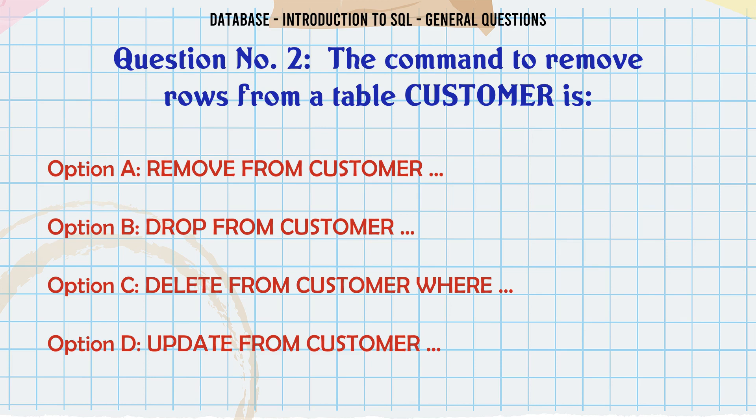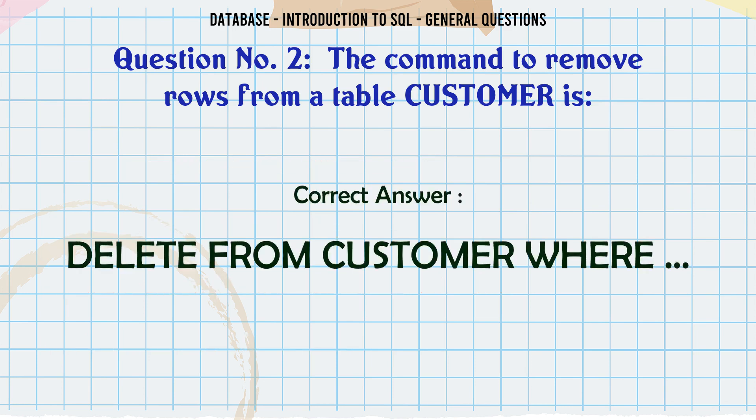The command to remove rows from a table customer is: A. Remove from customer. B. Drop from customer. C. Delete from customer where. D. Update from customer. The correct answer is Delete from customer where.